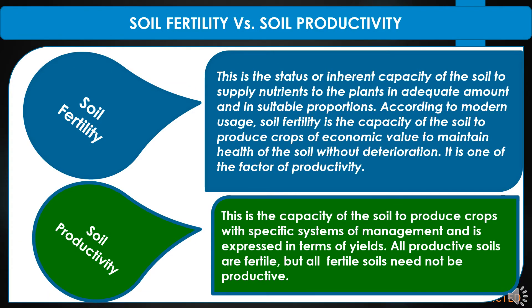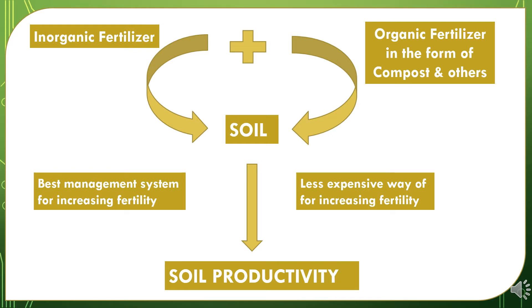Here we will study about soil fertility and soil productivity. Soil fertility is the status or inherent capacity of the soil to supply nutrients to plants in adequate amounts and in suitable proportions. According to modern usage, soil fertility is the capacity of the soil to produce crops of economic value and to maintain health of the soil without deterioration. It is one of the factors of productivity. Soil productivity is the capacity of the soil to produce crops with specific systems of management and is expressed in terms of yield. All productive soils are fertile, but all fertile soils need not be productive.